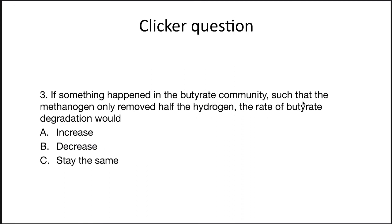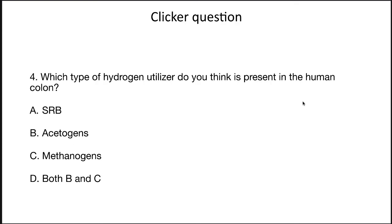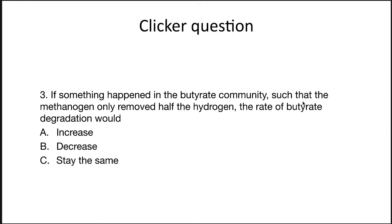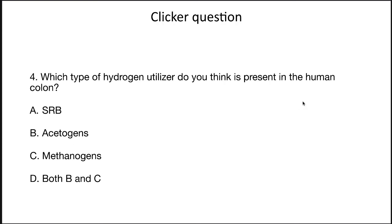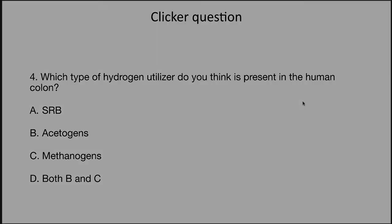Some clicker questions: If something happened in the butyrate community such that the methanogen only removed half the hydrogen, the rate of butyrate degradation would decrease — because if you're taking less hydrogen away, it slows down the butyrate degradation. For the second question, which type of hydrogen utilizer is present in the human colon: almost everyone has been shown to have both methanogens and acetogens, so the correct answer is both.